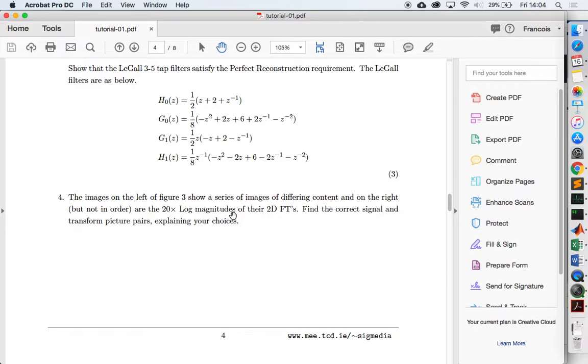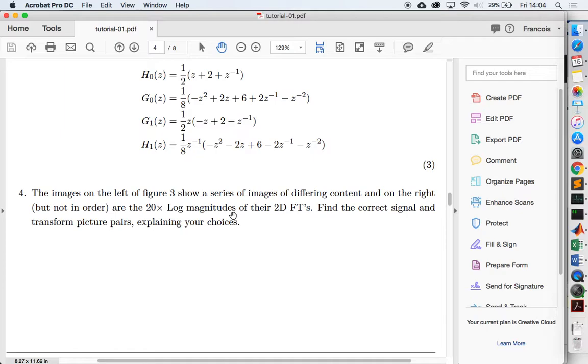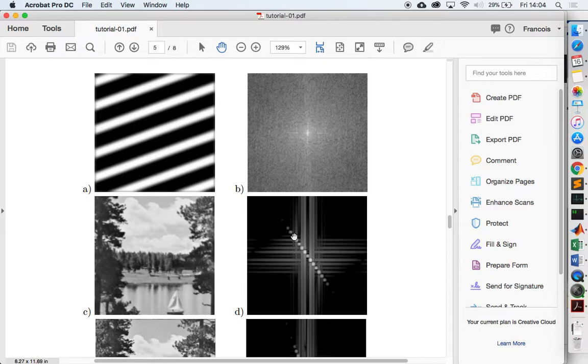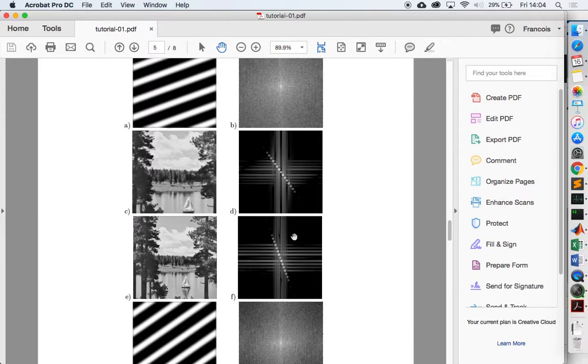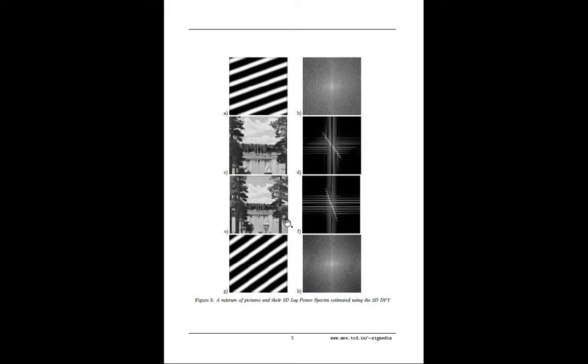All right, so the last one, it's question four. We have a number of pictures and we're looking at the log magnitudes of the 2D Fourier transforms and we need to identify and pair them with the pictures. Okay, so these are the four pictures we're looking at.